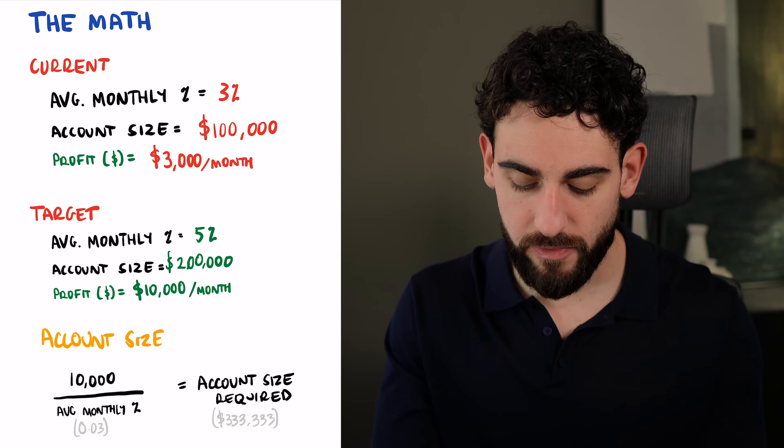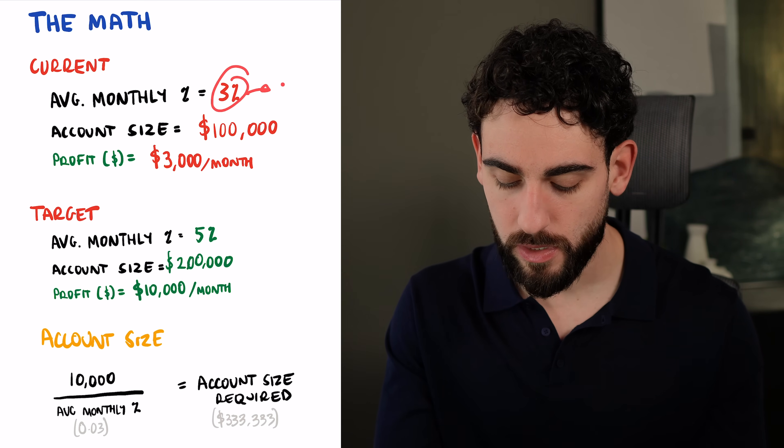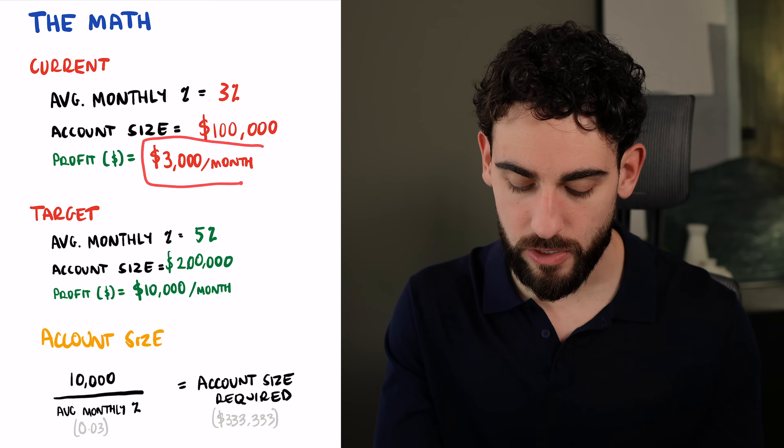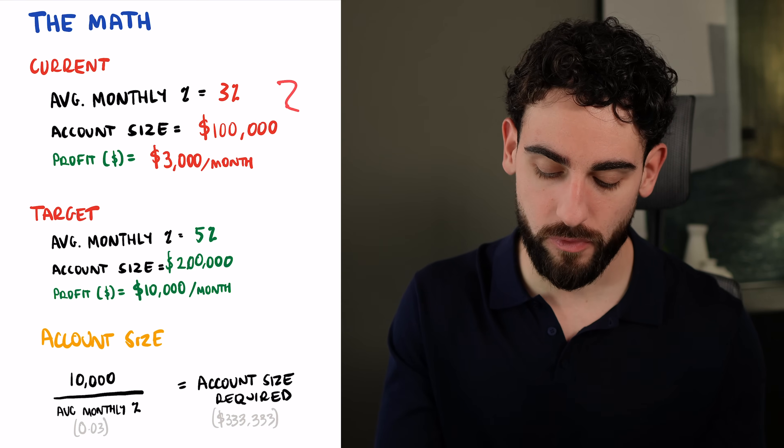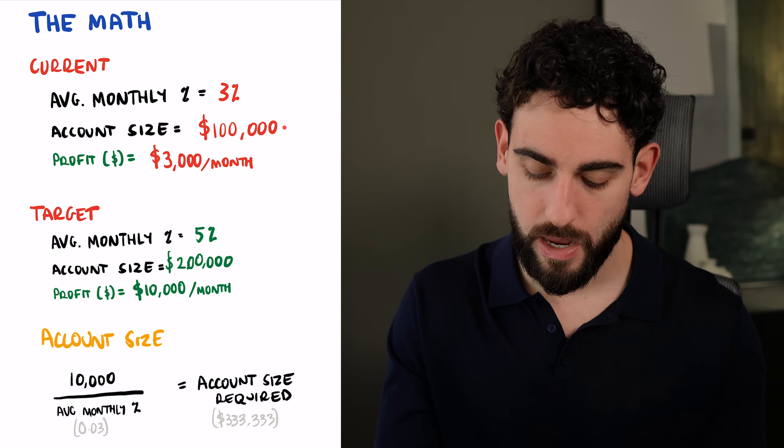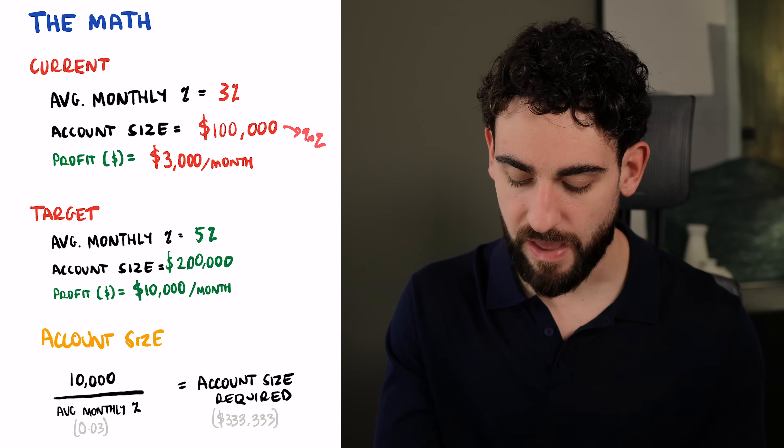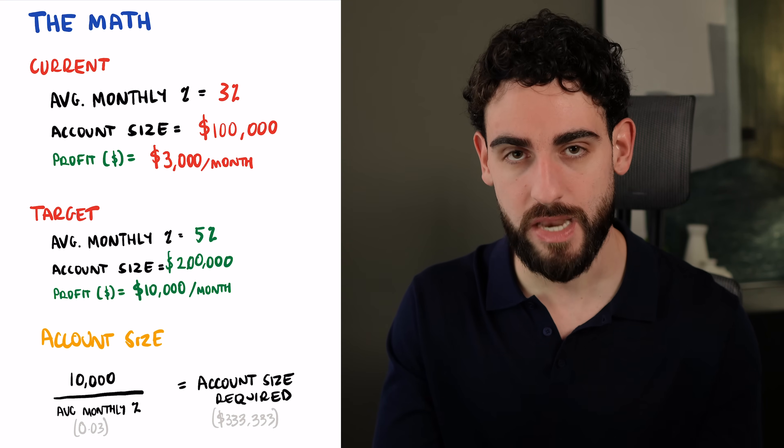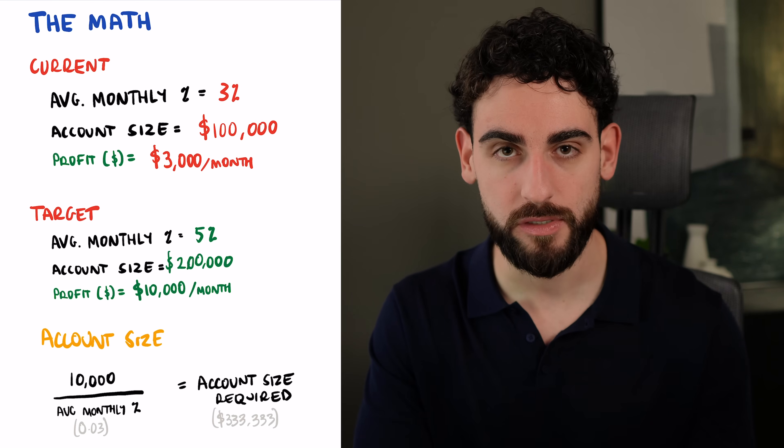Take your last 12 months return divided by 12, that's your average, and then have a look at what account size you're trading. You turn this percentage into a number 0.03 and you multiply that by your account size, and you have an average monthly profit. So for example, if your current average monthly returns of 3% on $100,000 in funding, and you're getting 90% profit split, you're getting a little bit less than $3,000 per month.